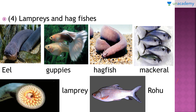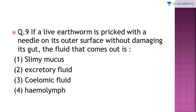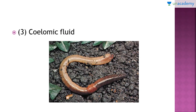Question number 9: if an earthworm is pricked with a needle on its outer surface without damaging its gut, the fluid that comes out is which of the following? If you read the question carefully you will be able to answer it. The right answer is option number 3, that is coelomic fluid. Here you can see the picture of a live earthworm. If you prick it with a needle without damaging the gut, you will get a colorless fluid which is the coelomic fluid.